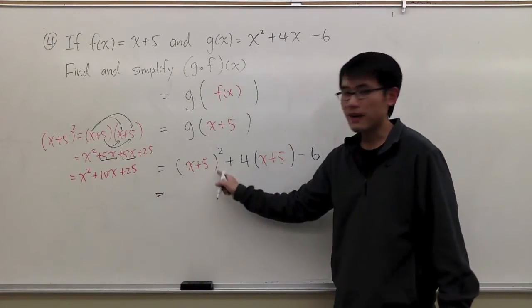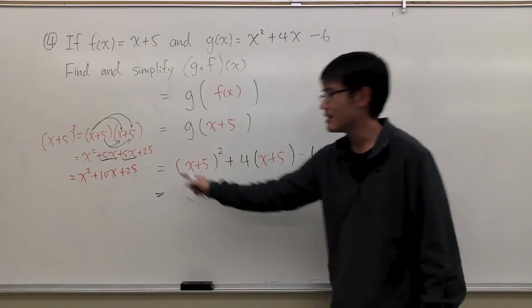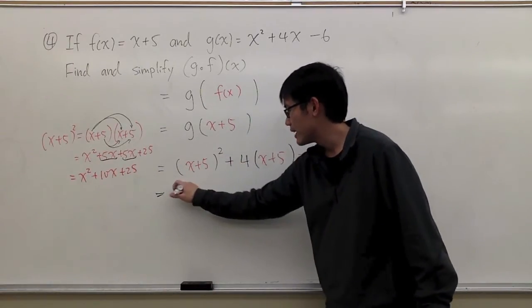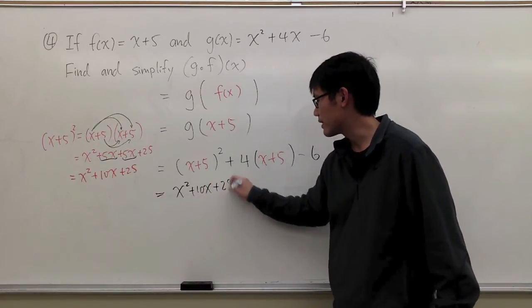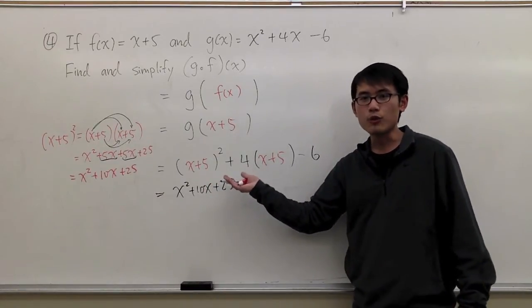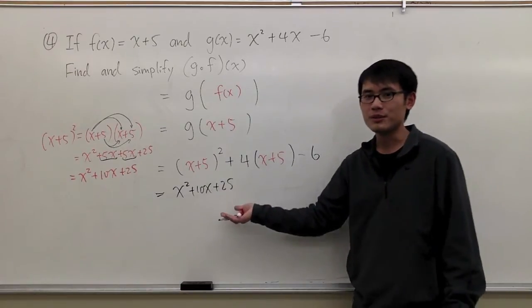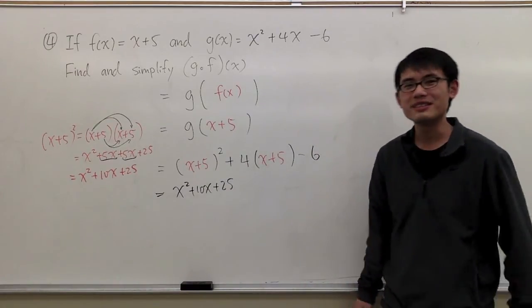So x plus 5 squared, this will be that: x squared plus 10x plus 25. Or you can use the binomial formula to multiply this out. It doesn't matter, it's the same.